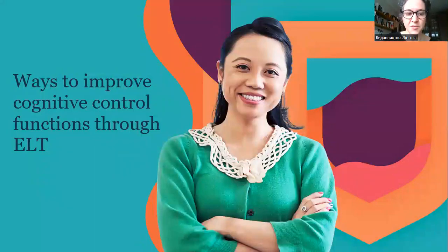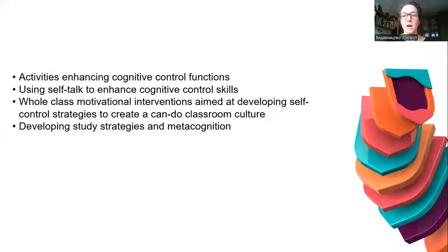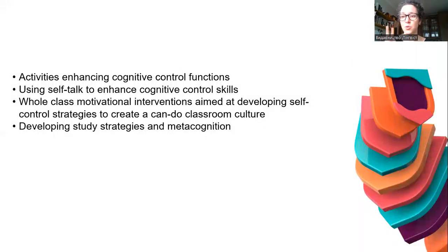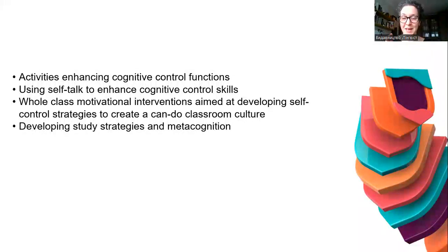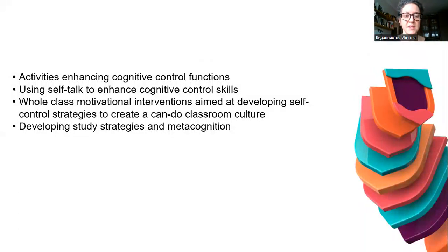There are four main ways to improve cognitive control functions through ELT: activities enhancing cognitive control functions, using self-talk to enhance cognitive control skills, whole-class motivational interventions aimed at developing self-control strategies to create a can-do classroom culture, and developing study strategies and metacognition. I'll show you two activities today; the rest will be discussed at the next webinars.